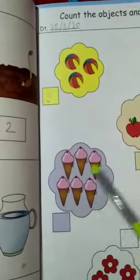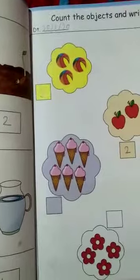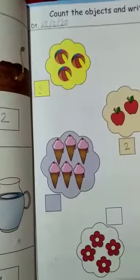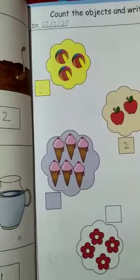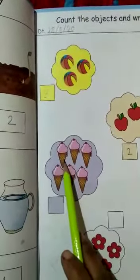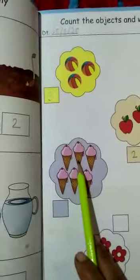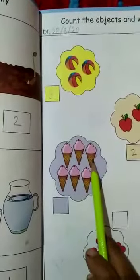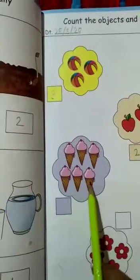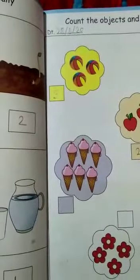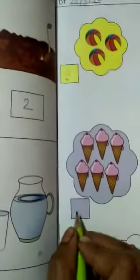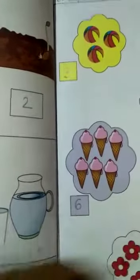Which picture is this? These are ice creams. How many ice creams? Count it: one, two, three, four, five, six. How many ice creams? Six. So come on, write the number six here.